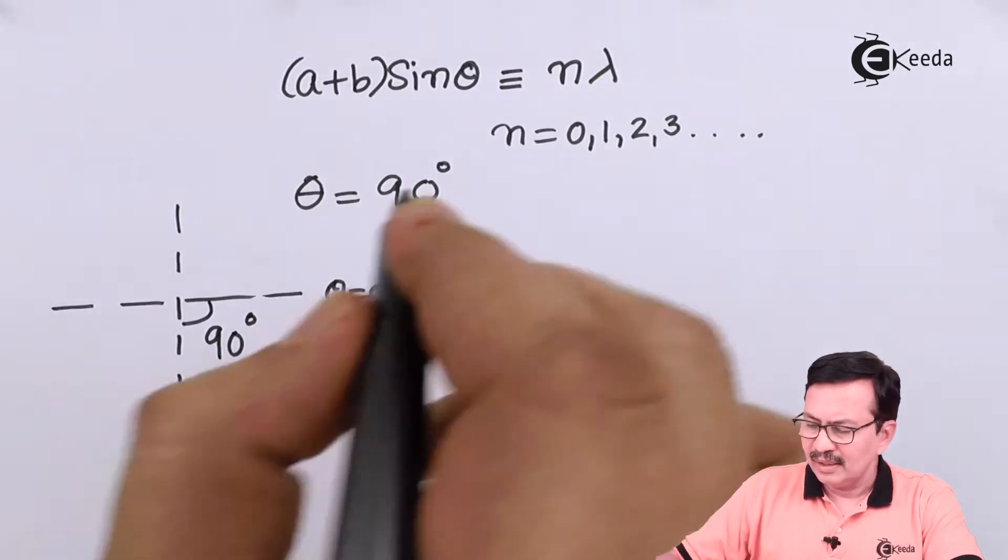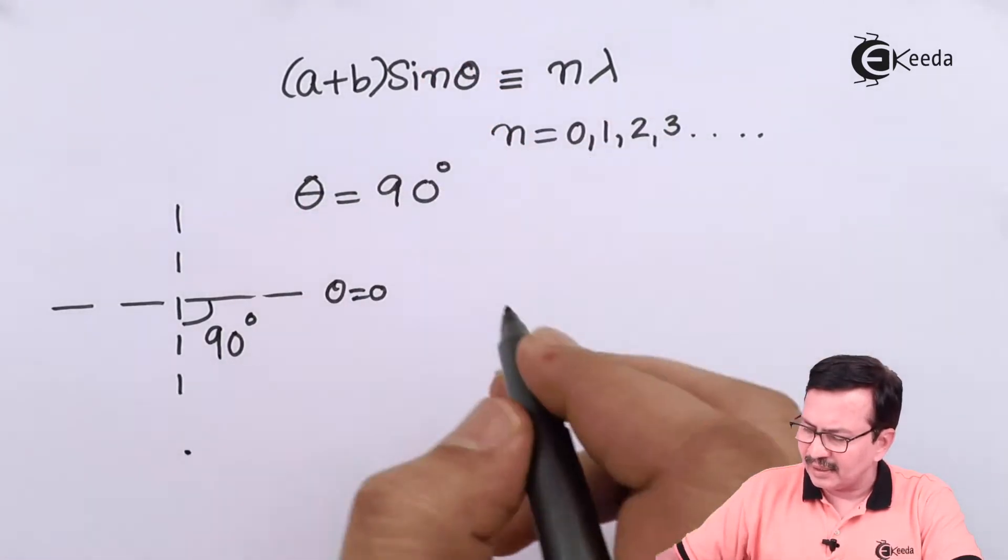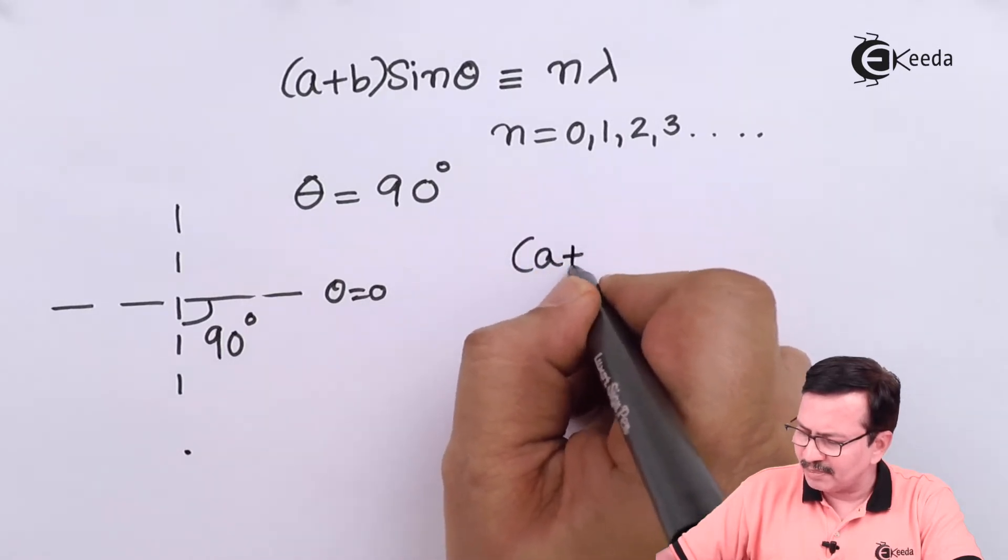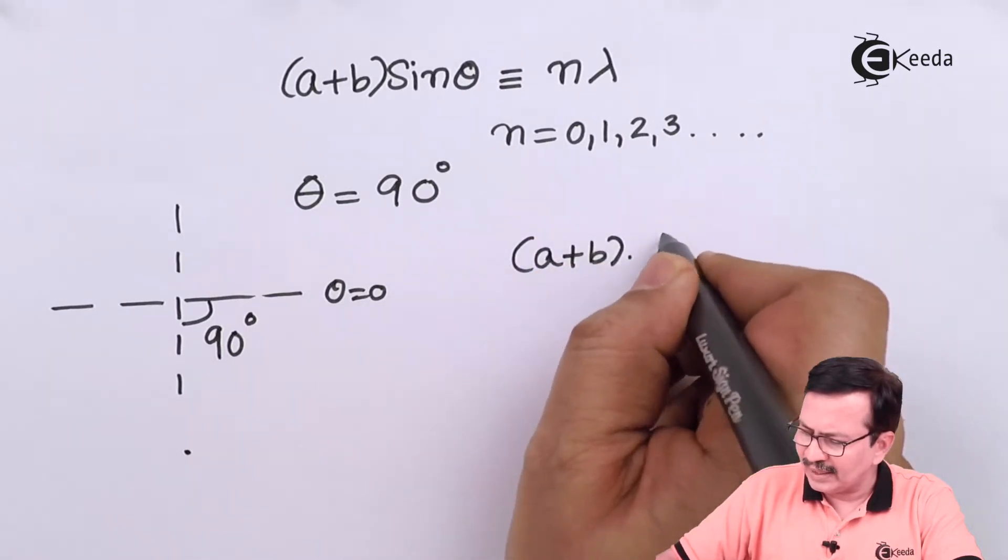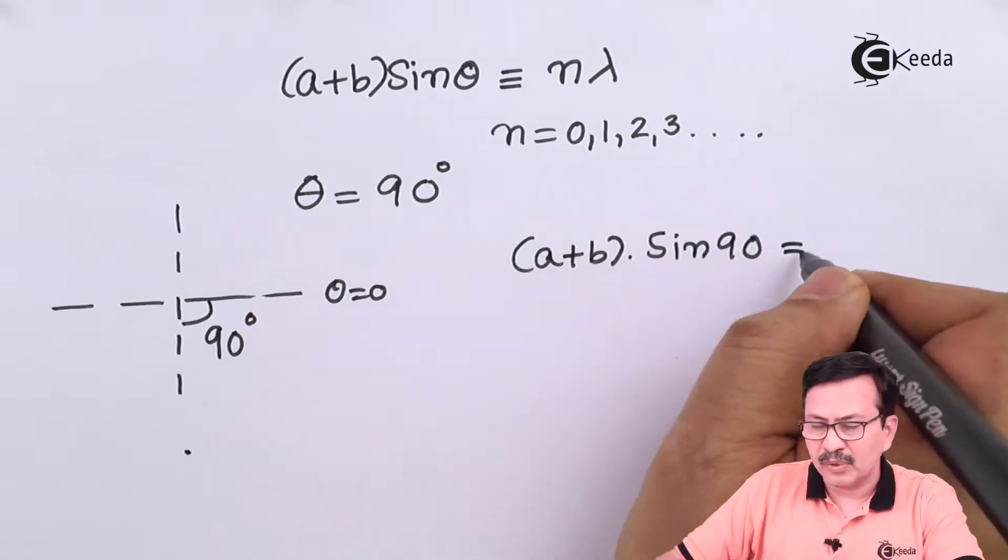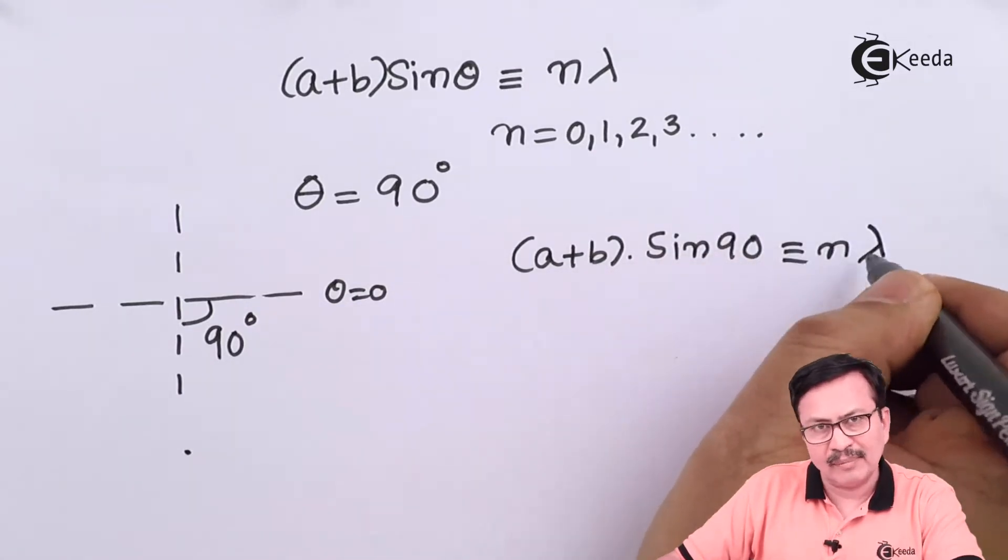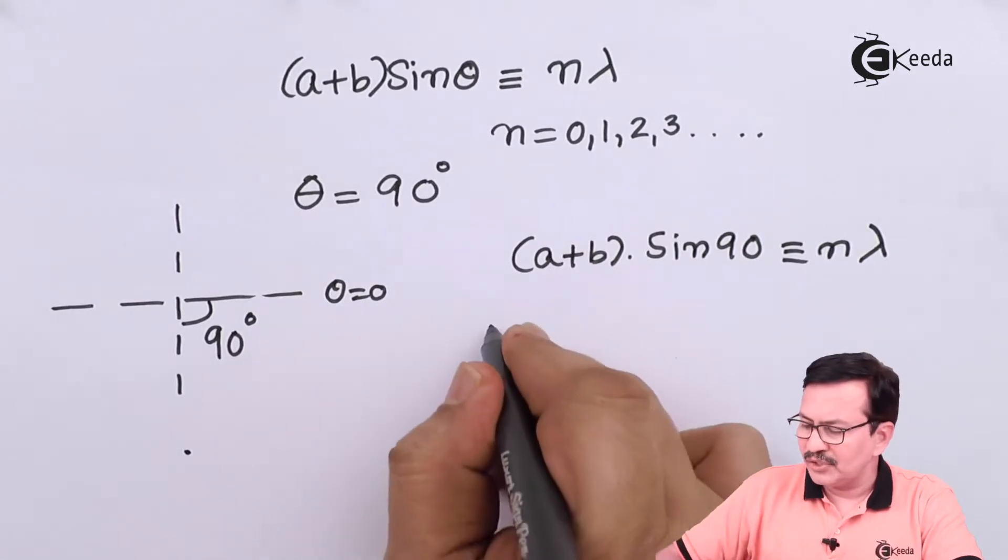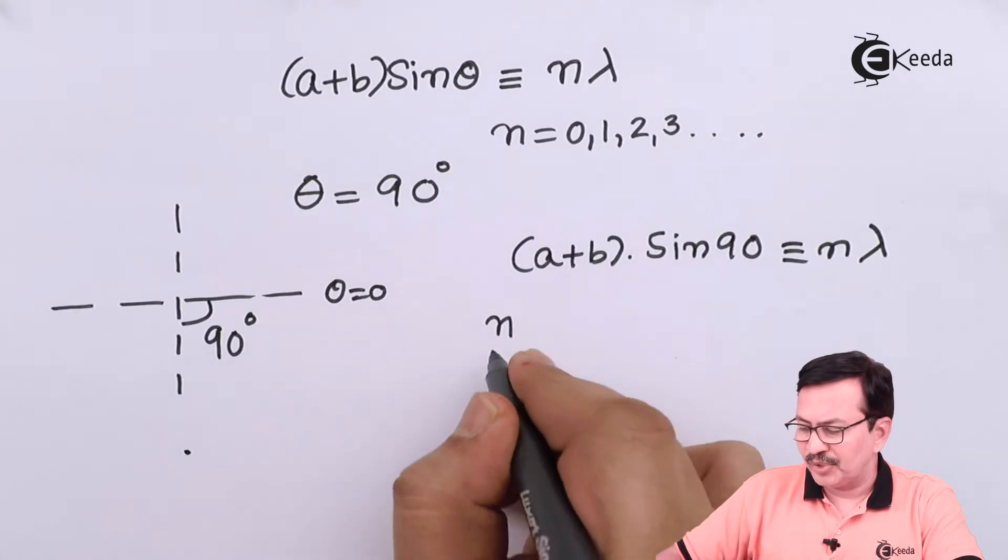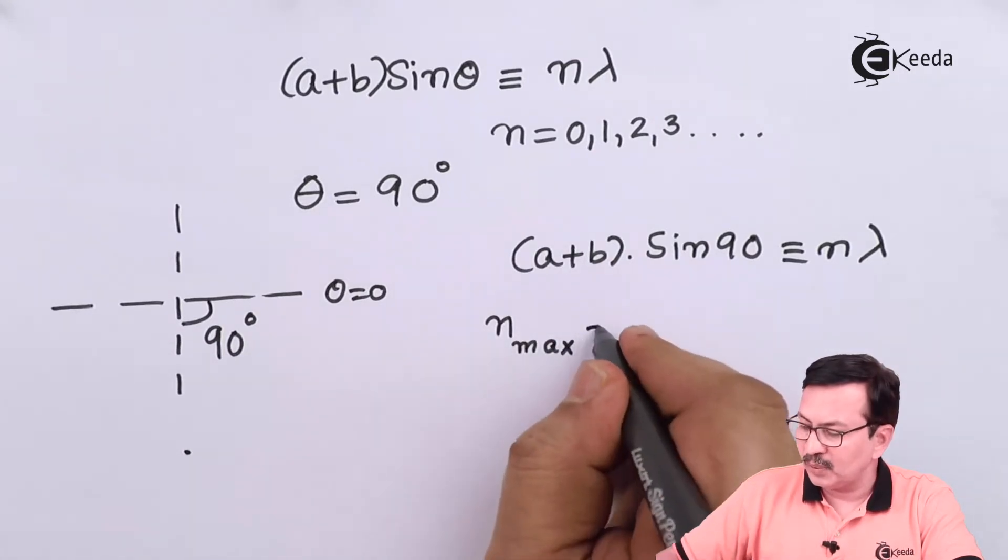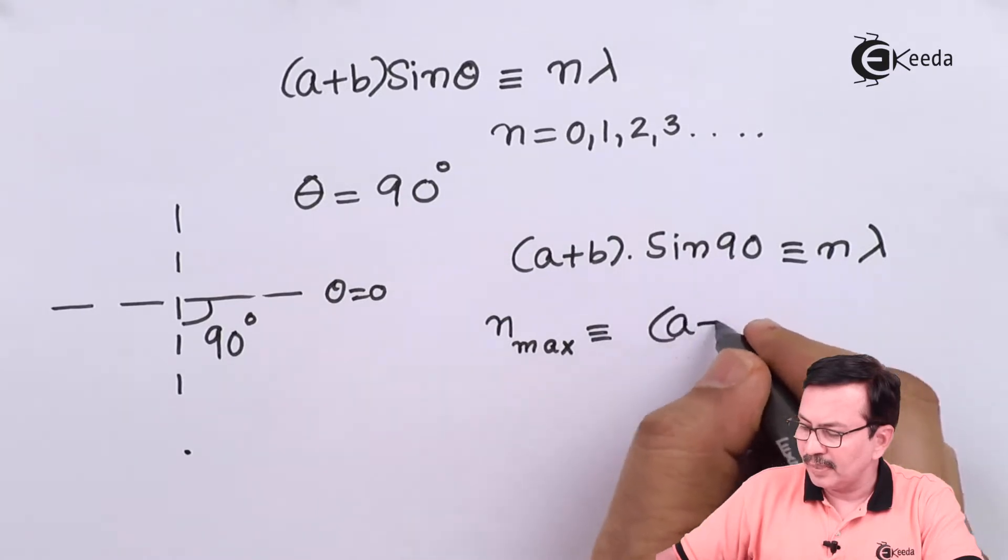Hence substituting 90 over there you obtain that your a plus b into sine 90. Sine 90 of course is 1, and hence your n, I am going to be specific over here, maximum order is equal to a plus b divided by lambda.